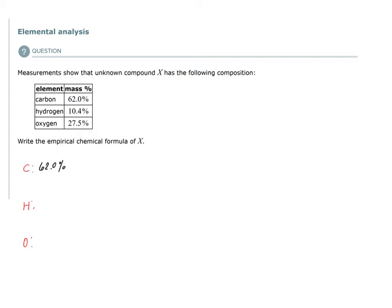10.4% of the mass of the sample is from the hydrogen, and 27.5% of the total mass in this sample is from the oxygen. This should total something very close to 100%. We get 99.9% - that's just from error in the determination of these mass percentages.